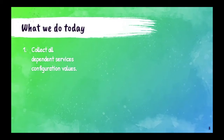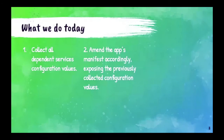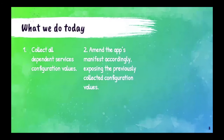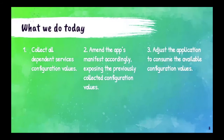Second, after gathering all configuration values, you would go ahead and manually append the application's manifest accordingly, exposing the previously collected values. Third, you would adjust the application to consume those configuration values. It might happen that the exposed values don't have the same names as those referenced by the application, in which case you may even have to make changes to your application. As we can see, configuration and maintenance can be a tedious and inefficient process.